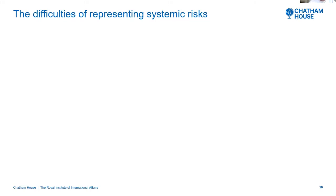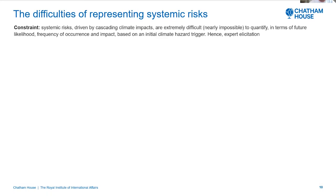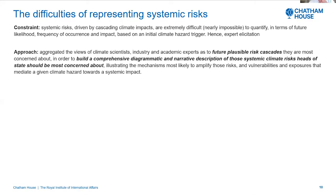Moving on from those direct impacts — heat waves, food security and so on — towards the systemic risks: some of the difficulties of representing those systemic or cascading risks. The constraint is that systemic risks are driven by a cascade of climate impacts and are extremely difficult, nearly impossible, to quantify in terms of future likelihood, frequency of occurrence and impact based on one particular initial climate hazard trigger. Hence we use an expert elicitation method — our approach was to aggregate the reviews of climate scientists, industry and academic experts on the future plausible risk cascades they're most concerned about.